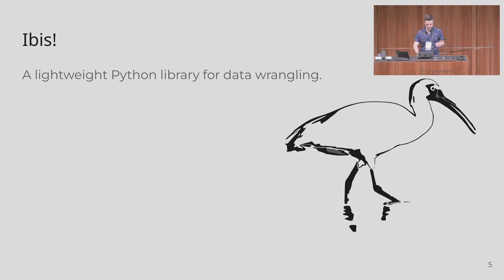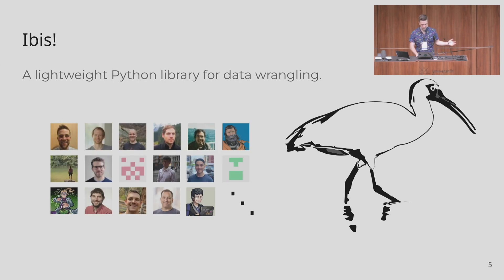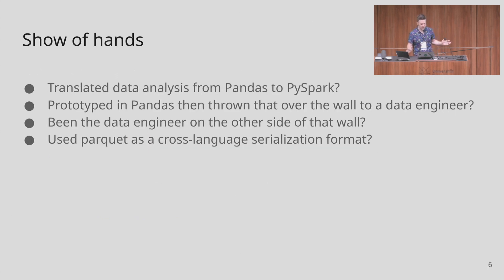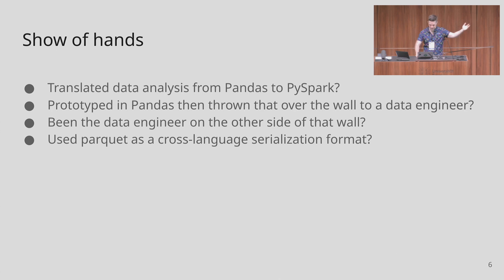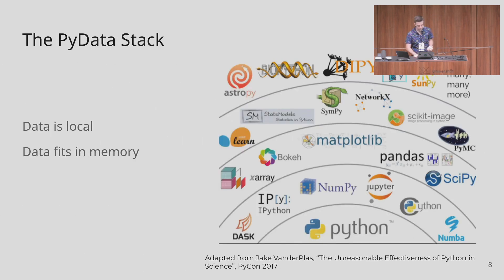IBIS is a lightweight Python library for data wrangling. Let me set the stage. Show of hands — who has translated data analysis from pandas to PySpark, prototyped in pandas and then thrown that thing over the wall to a data engineer, or been the data engineer on the other side of that wall? Many people have done at least one of these things, and none of these tools are bad — they're actually quite good at what they do.